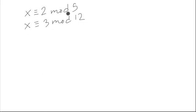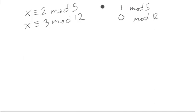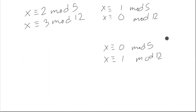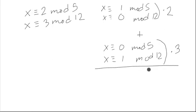So to do this, first of all, we find a solution to two simpler equations. We find a solution to the equation with a 1 and 0, and we also find a solution to the equation where we have a 0 and a 1 instead. Then we multiply the first solution by 2 and the second solution by 3, and we simply add the results. And then we'll get a solution to the whole system.